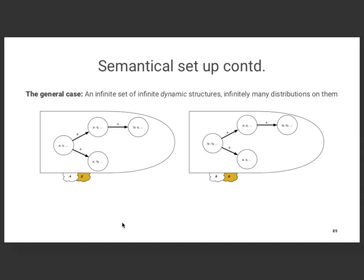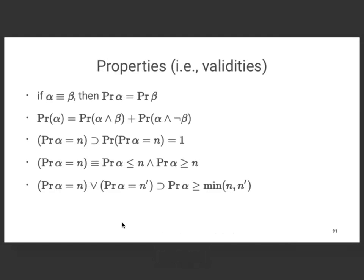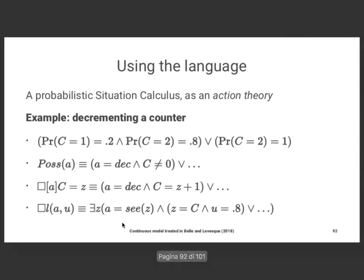I'm talking about a language where you can say things like: the probability of a formula is less than, equal to, or greater than a number — so you give inequalities for probabilities rather than exact values. Even in this case, when you don't have a unique distribution, all the axioms of probability immediately follow. If the probability of an event is n, then it's both less than n and greater than n; or if the probability is either n or n prime, it must be at least the minimum. Union and disjunction certainly work.